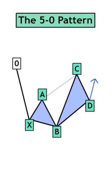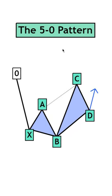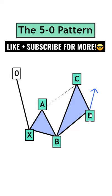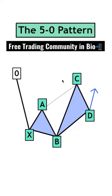So that's everything for the 5-0 pattern. This harmonic is a continuation pattern, so your entries are at point D with the take profit levels around point 0, and these are best combined with the overall price action.